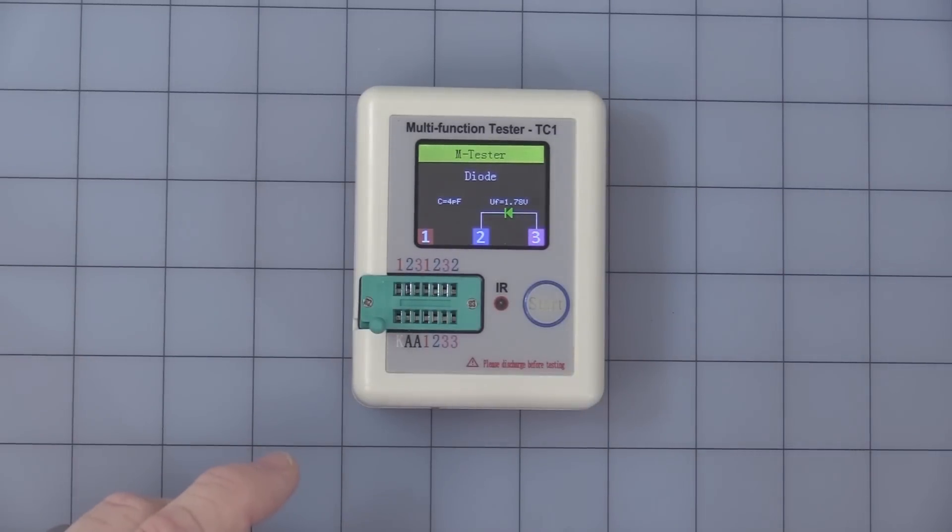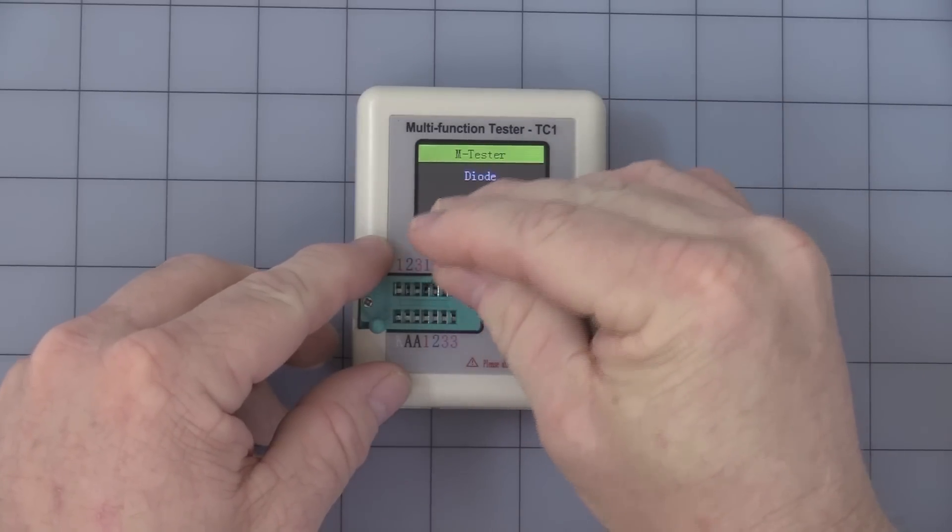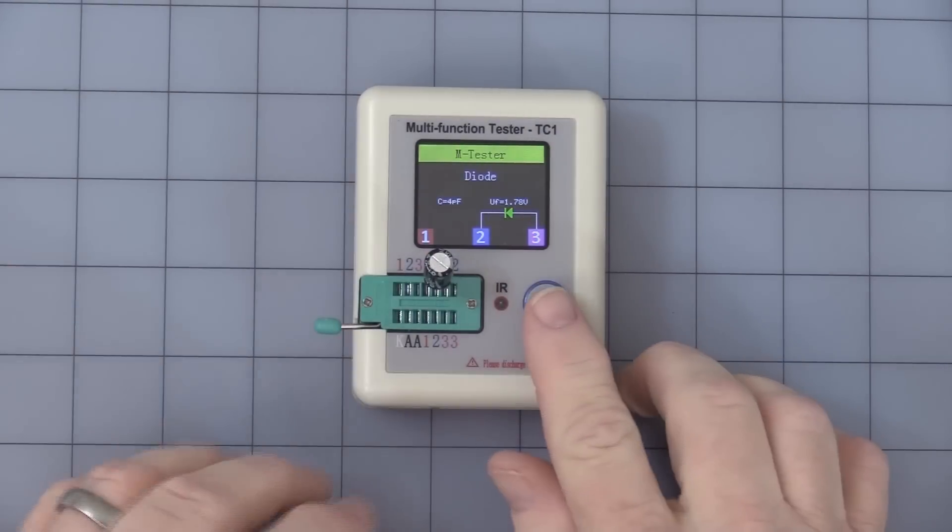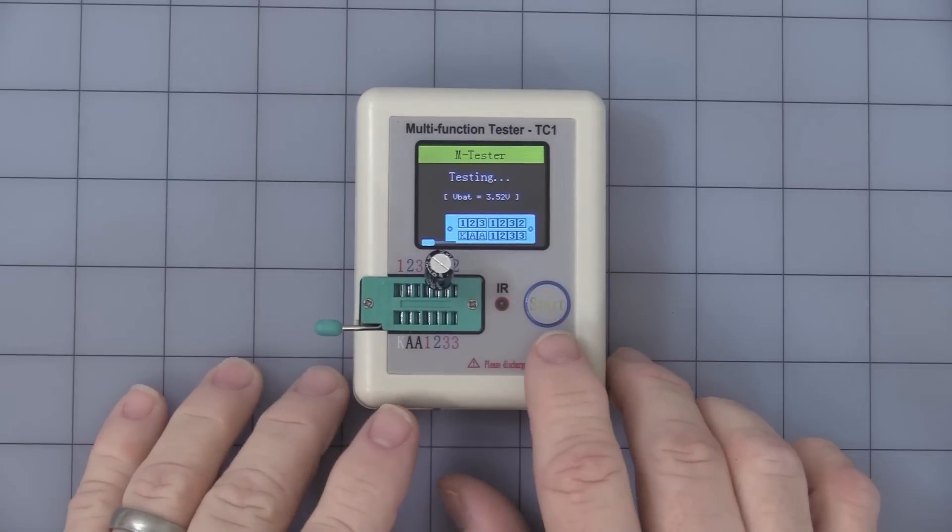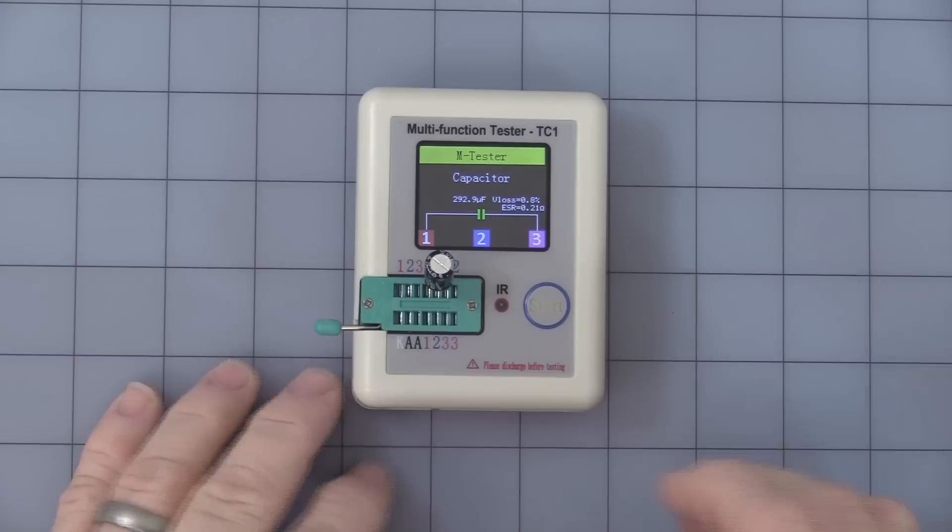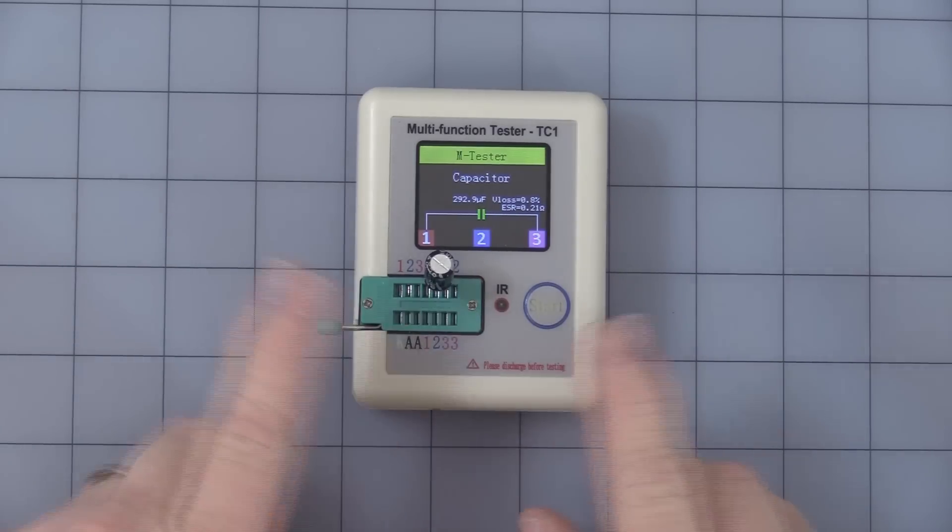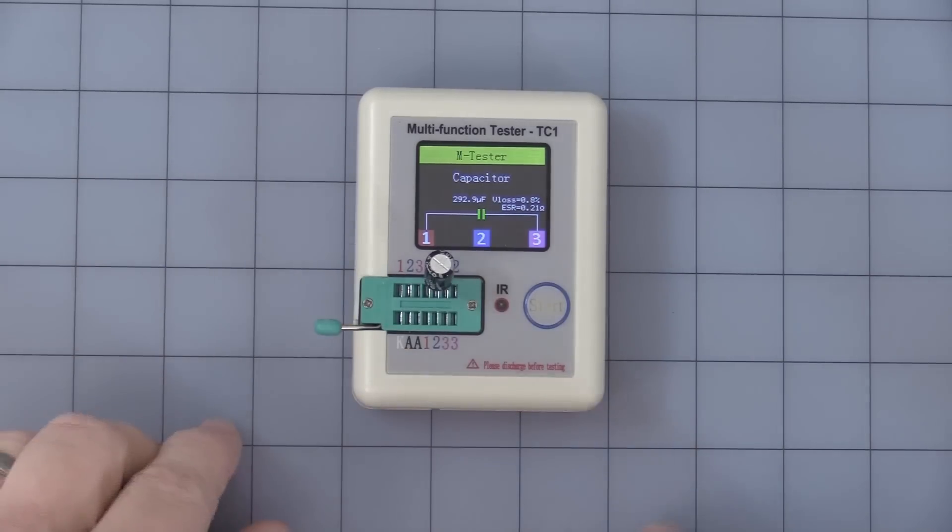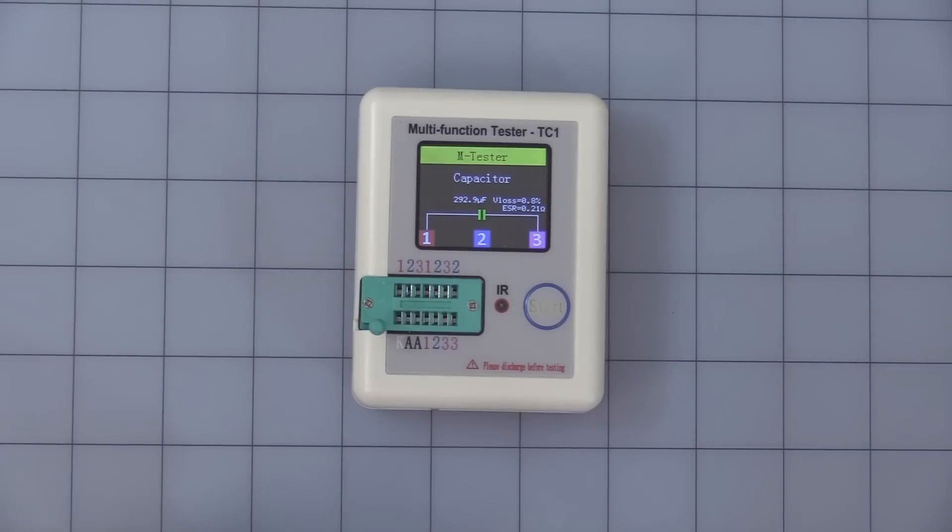Then we have a nice little electrolytic capacitor. I looked this up, these are only about plus or minus 20% tolerance, 330 microfarad. And you can see it's measuring 292. Still within tolerance, but I wouldn't expect it to be that far out of tolerance.